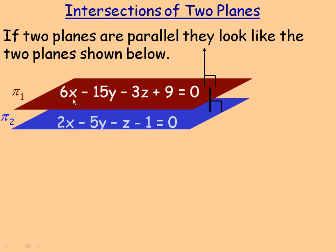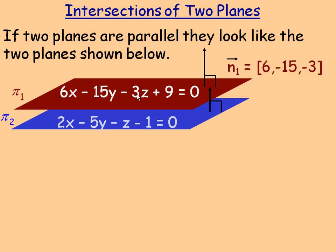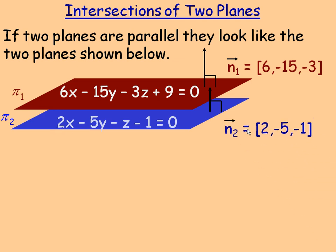The coefficients of x, y, and z — 6, negative 15, negative 3 for pi1 — are the components of the normal vector. Remember, a normal vector is perpendicular, or orthogonal, to the plane. For pi2, the normal vector is 2, negative 5, negative 1.